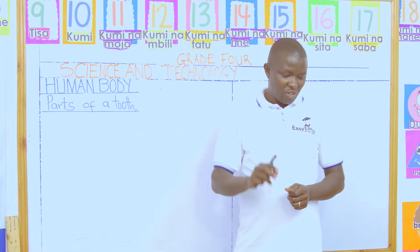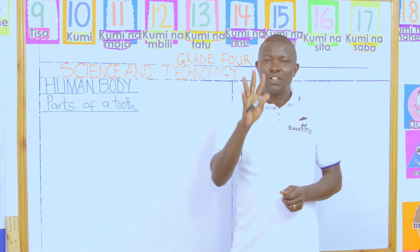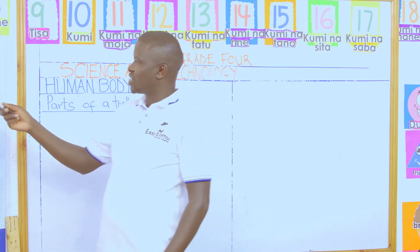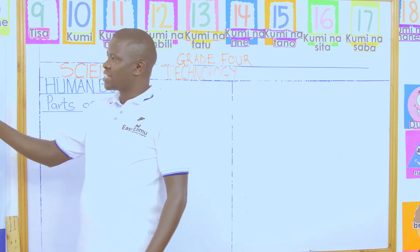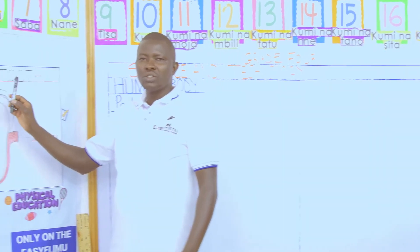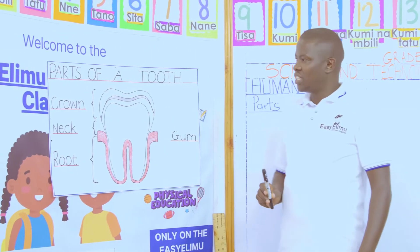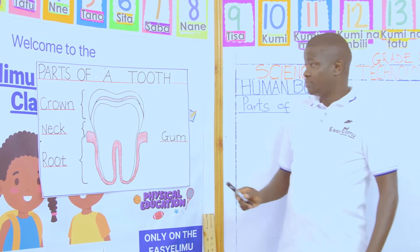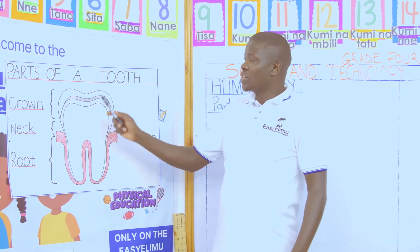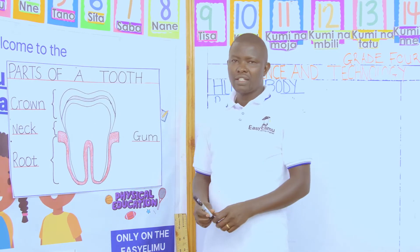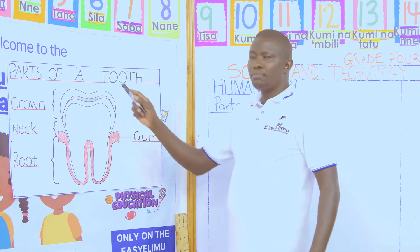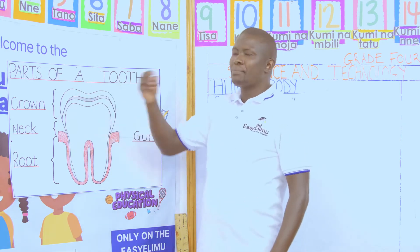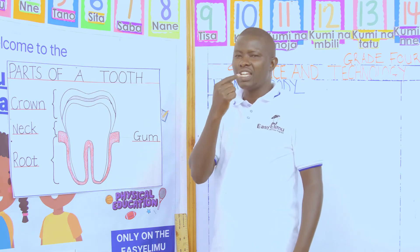Today I want us to look at this chart. It has the parts of the tooth that you have seen in your partner. The parts of a tooth that you have seen - a tooth has three parts.